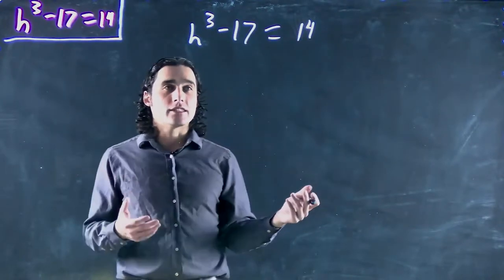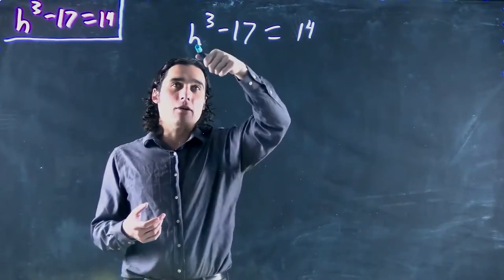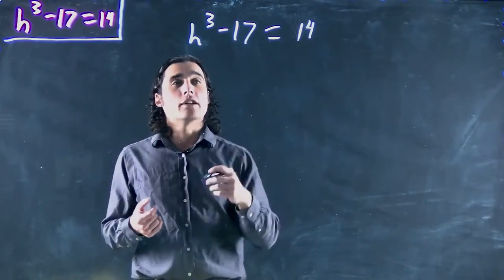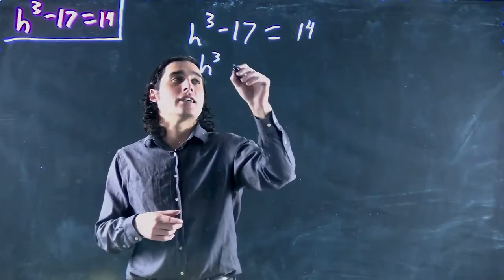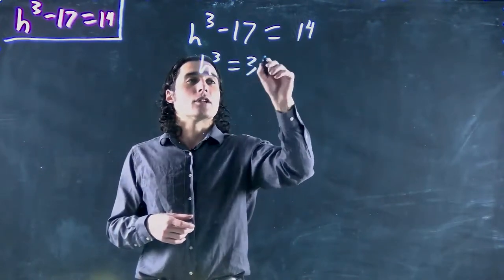The only thing with this one is that we have to get the power function on its own first. So we want to get rid of the 17, bring it to the other side or add 17 to both sides and we'll get h cubed equals 31.